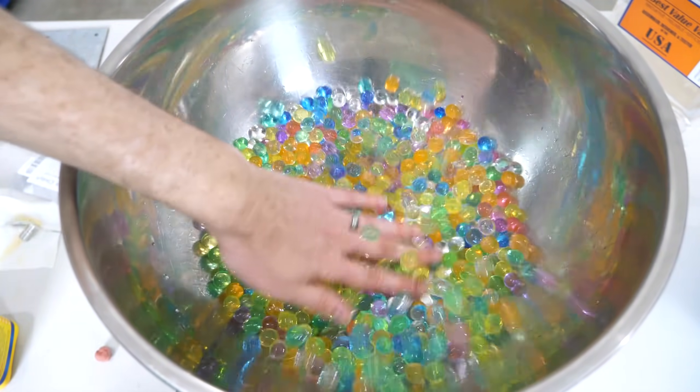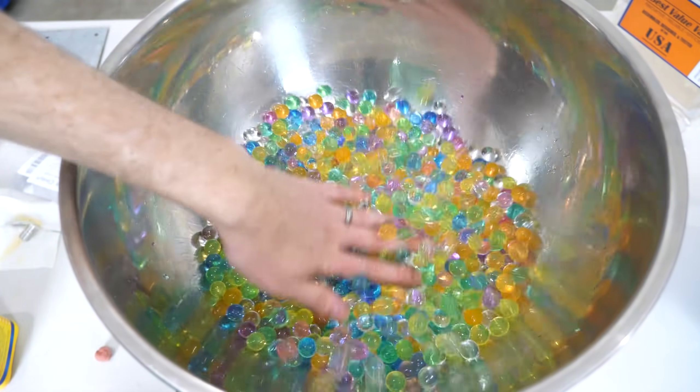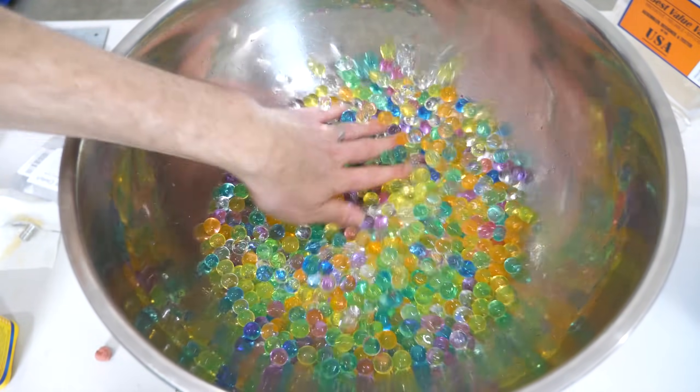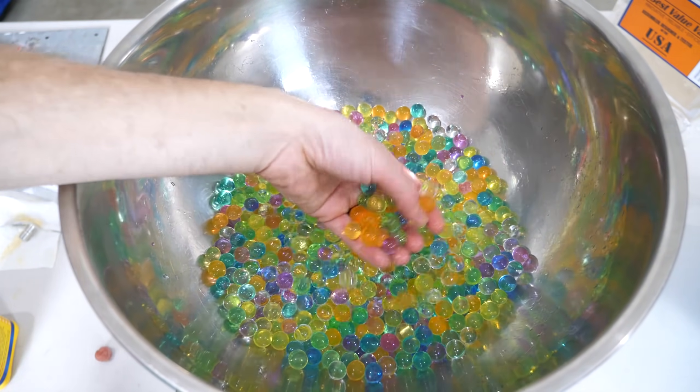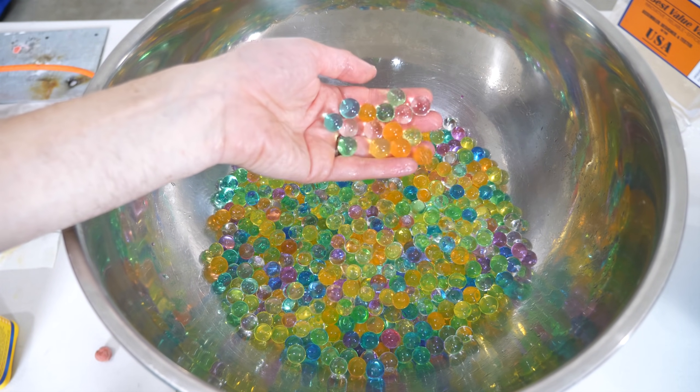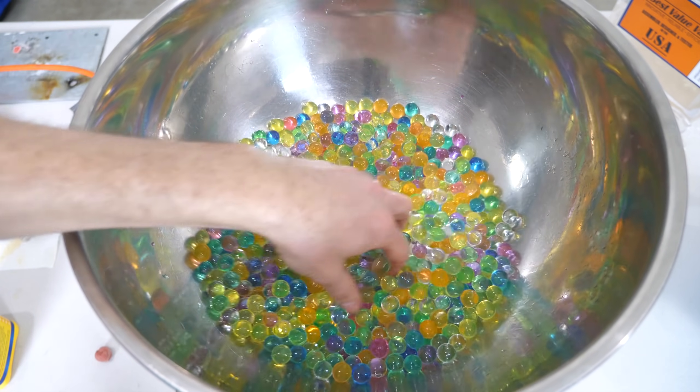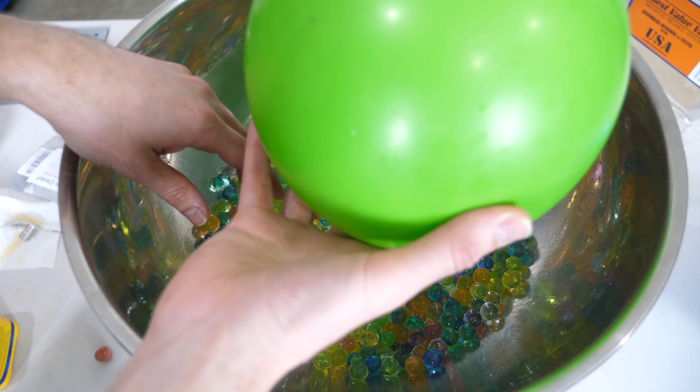But all of these atoms and molecules around us are too small to see. But what we can see is something bigger. So for example, let's say I was trying to prove that these Orbeez exist, but they're too small for me to see. But I can see a big ball like this.